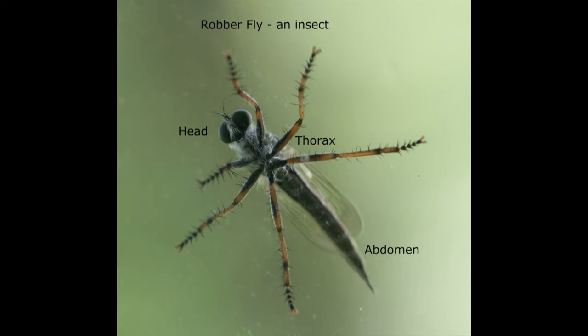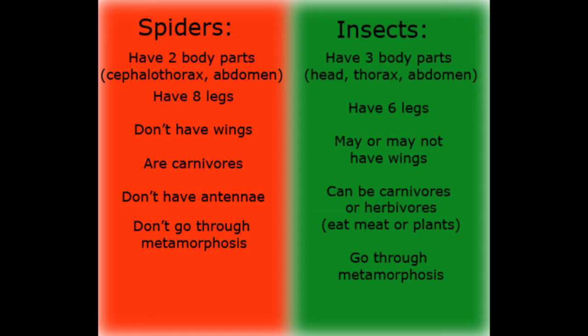Insects go through what we call metamorphosis. They start out as an egg, and depending on whether they go through complete or incomplete metamorphosis, they will become a larva, a pupa, and then an adult — or in the case of incomplete metamorphosis, they will be a nymph and then become an adult. Insects can be plant eaters or meat eaters. Some of them are only able to eat liquids like blood or sap from plants.